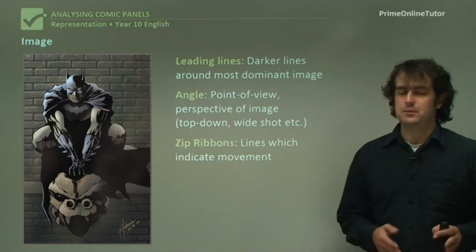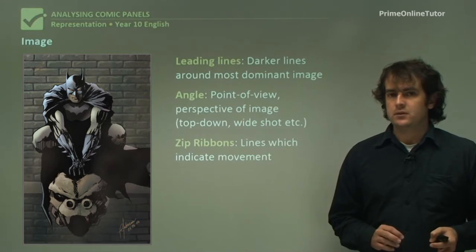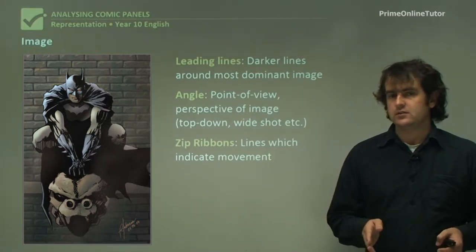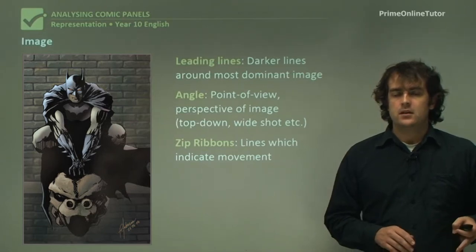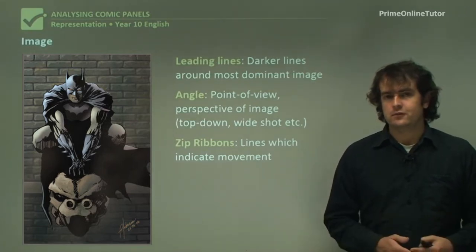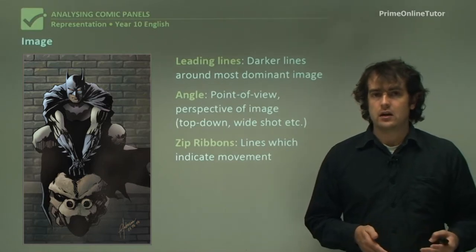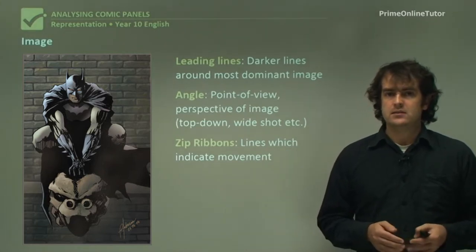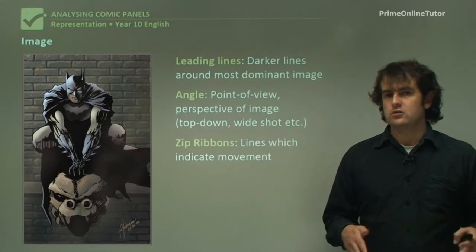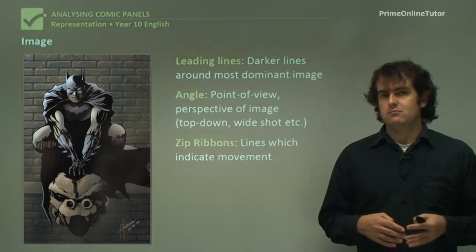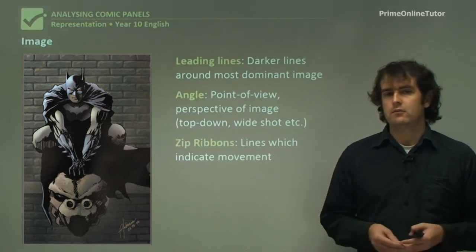Now zip ribbons — lines which basically indicate movement. So if you see little tiny lines around something — and actually our next slide will have an example of that — it shows where there is movement from an animal or a character or something like that. Those little lines around them show you where or how something is moving, whether it's moving quickly or whatever it may be.